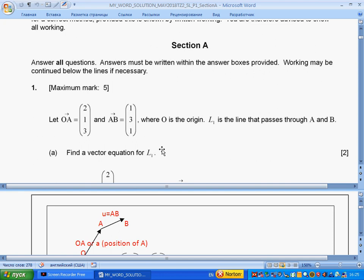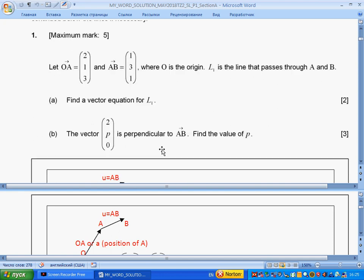First question, question one is about vectors. We are given two vectors, OA and AB, where O is the origin. L1 is a line that passes through A and B. Find a vector equation for line one.